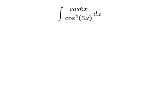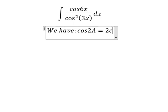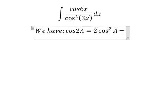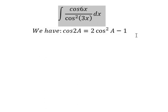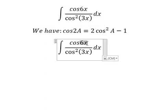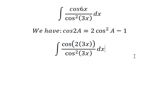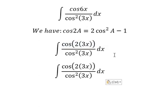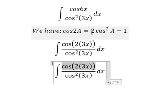Hello everybody, today I want to talk about integration. I want to show you how to answer this problem. We have the formula cosine 2A equals 2 cosine squared A minus 1. So cosine 6x is about 2 multiplied by 3x, so we need to transform this one into this one.